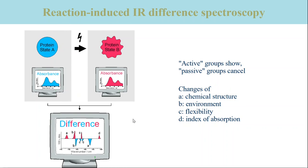State B may also be a sequence of transient states. In that case, the interconversion between the product states B1, B2 and so on can be followed by time-resolved methods. From the spectrum recorded before the start of the reaction — state A — and the spectra recorded during and after the reaction — the states B — difference spectra are calculated. They originate only from those protein residues that are affected by the reaction.